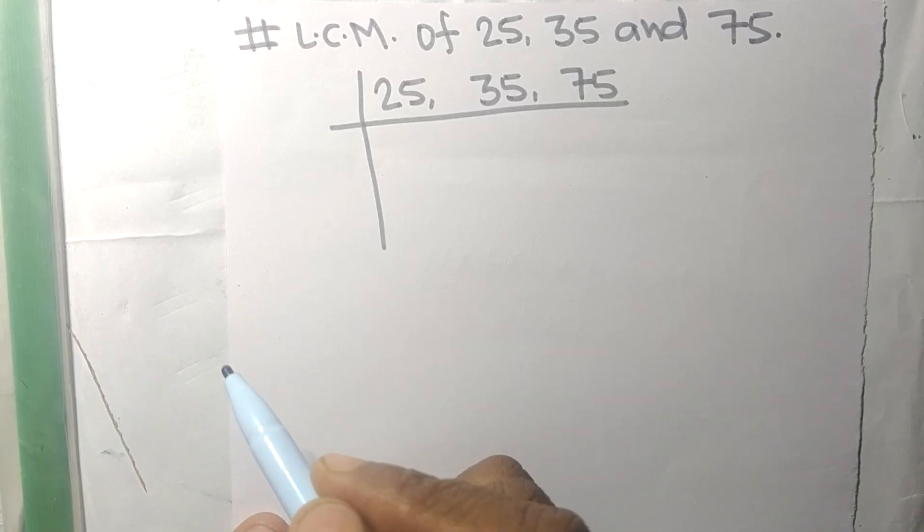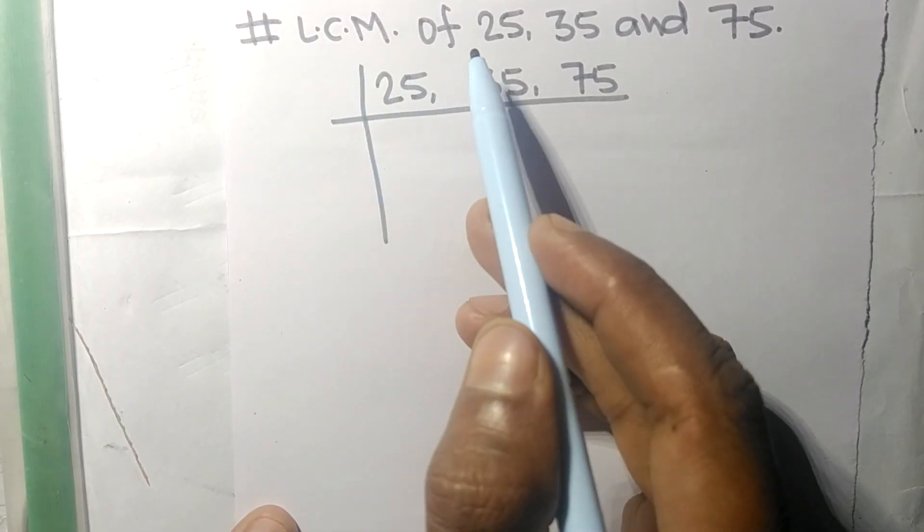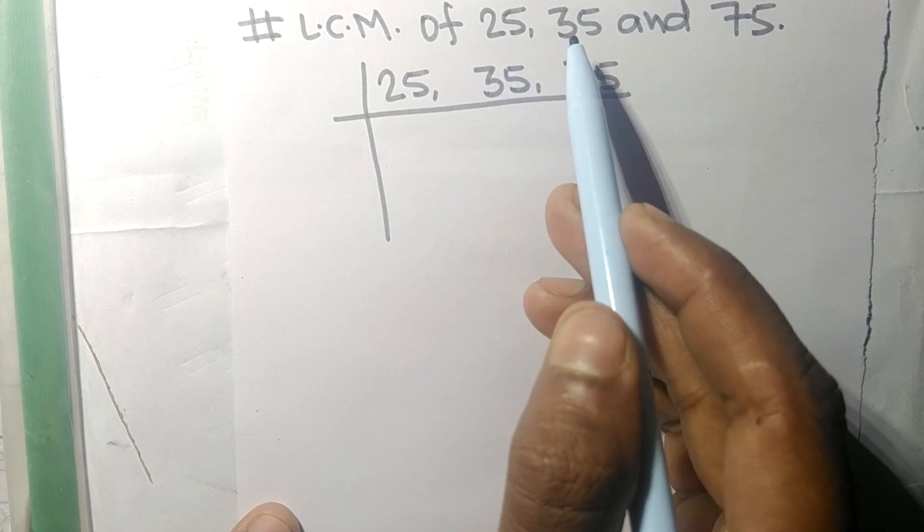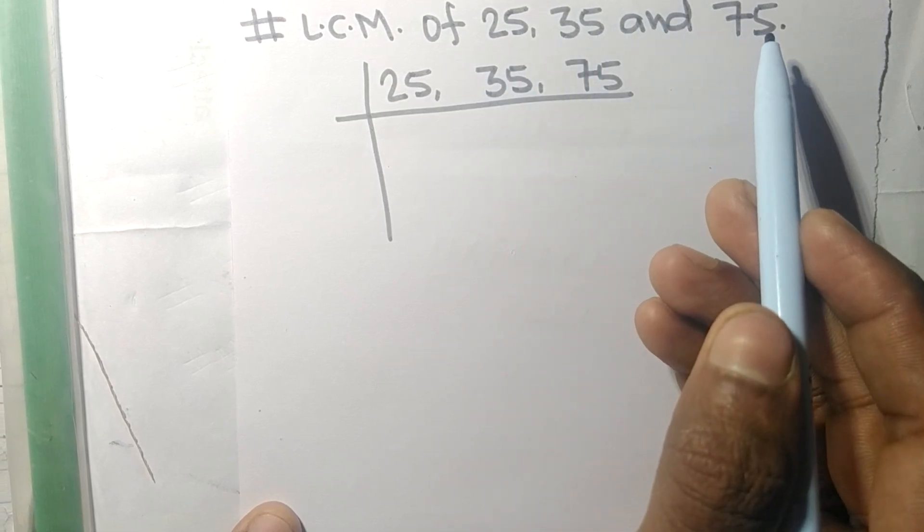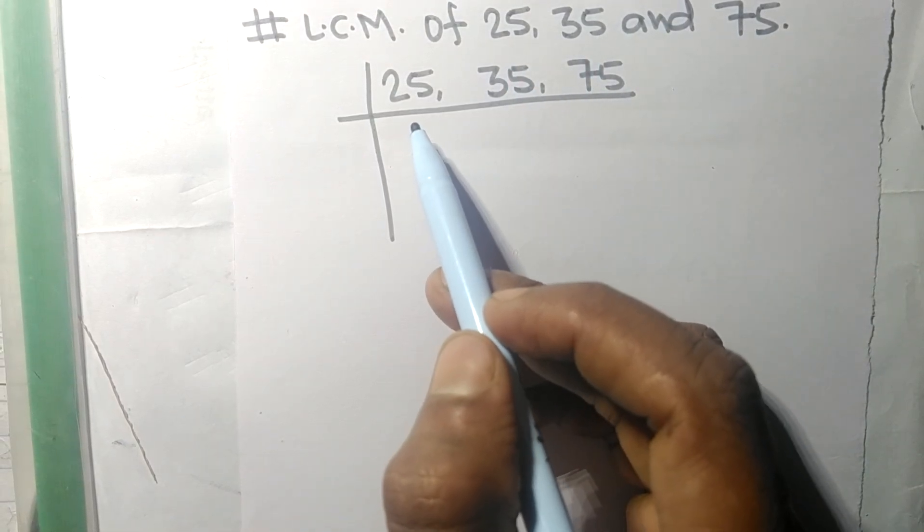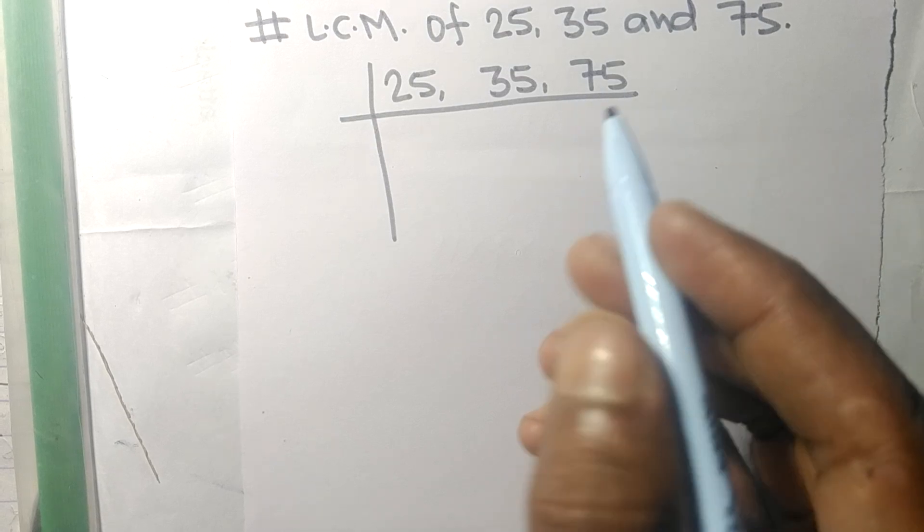Today in this video we shall find the LCM of 25, 35, and 75. All these numbers are exactly divisible by 5.